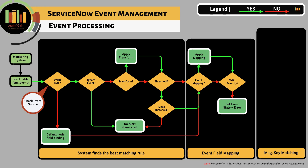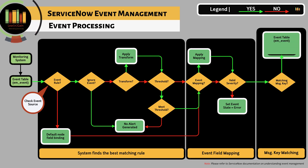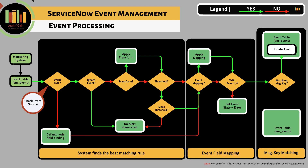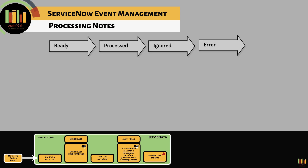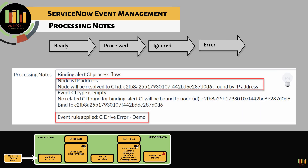As a final step before alert generation, the system searches for any matching message key. If a matching message key exists, it updates the existing alert and the event will be associated to the alert. A new alert is created if there is no matching message key. The state determines the lifecycle of an event. One can look at the processing notes within an event record to see which event rule was applied, whether CI binding occurred, which field mapping rules were applied, and so on.